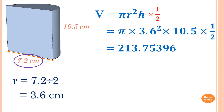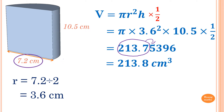To round the answer correct to one decimal place, we write up to 0.7. The number after 7 is 5 — halfway — so we add 1 to 7, which gives me 213.8 cubic centimeters.